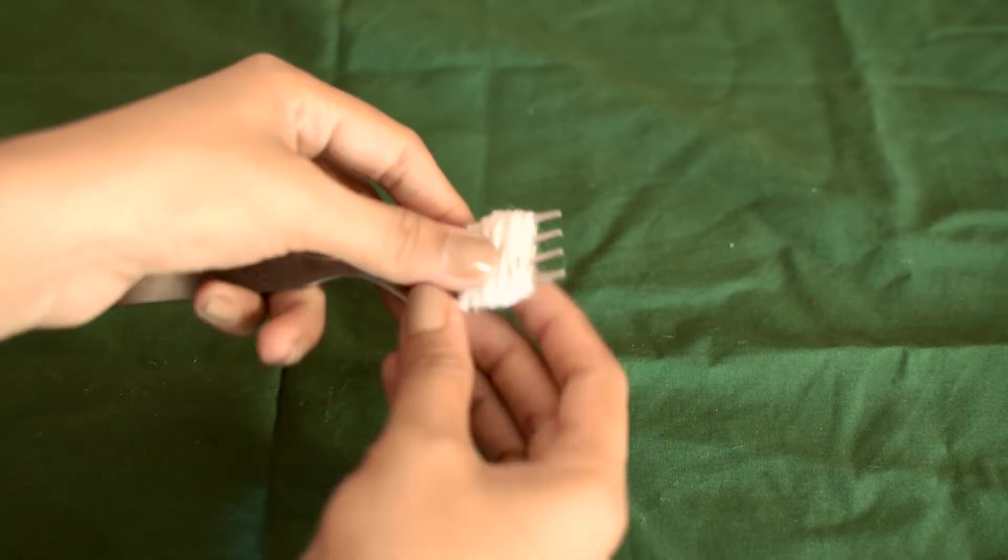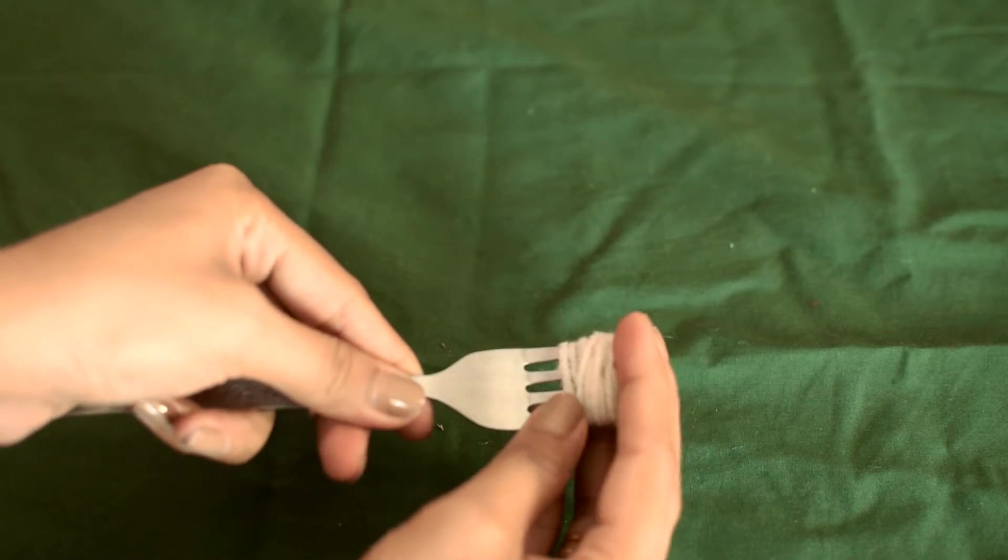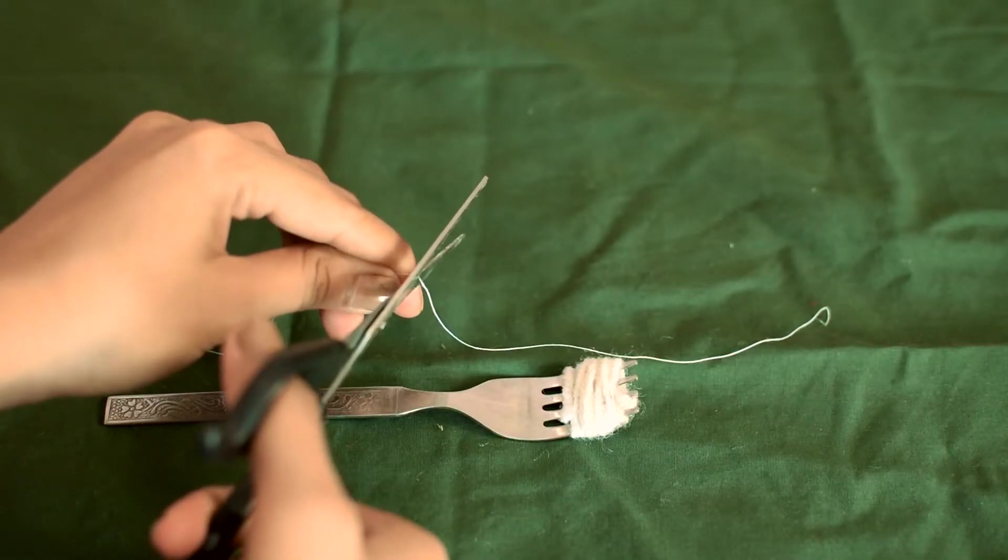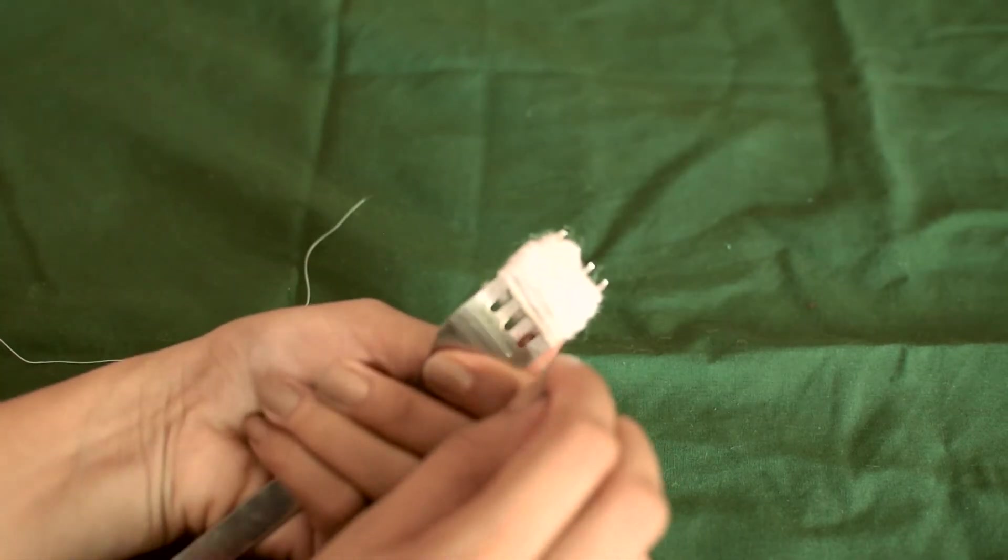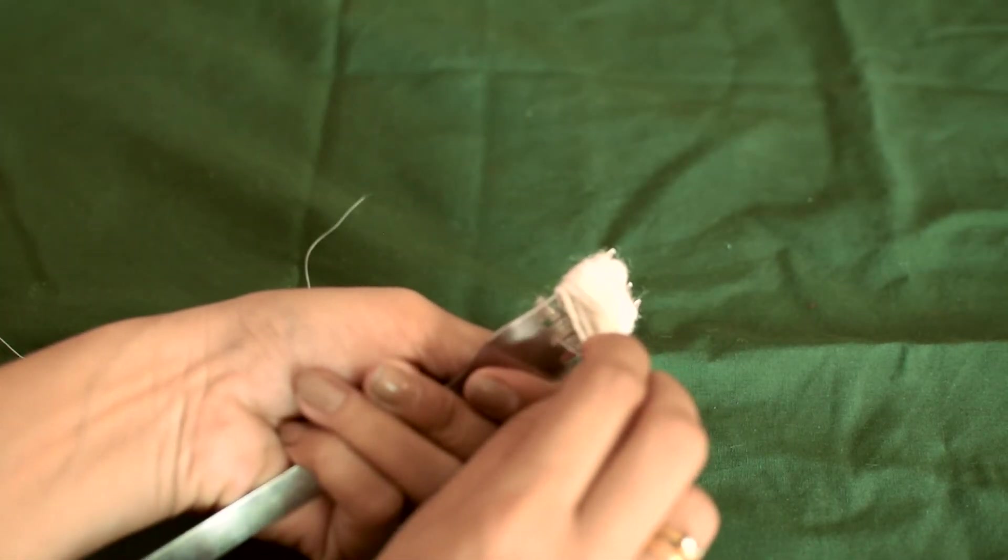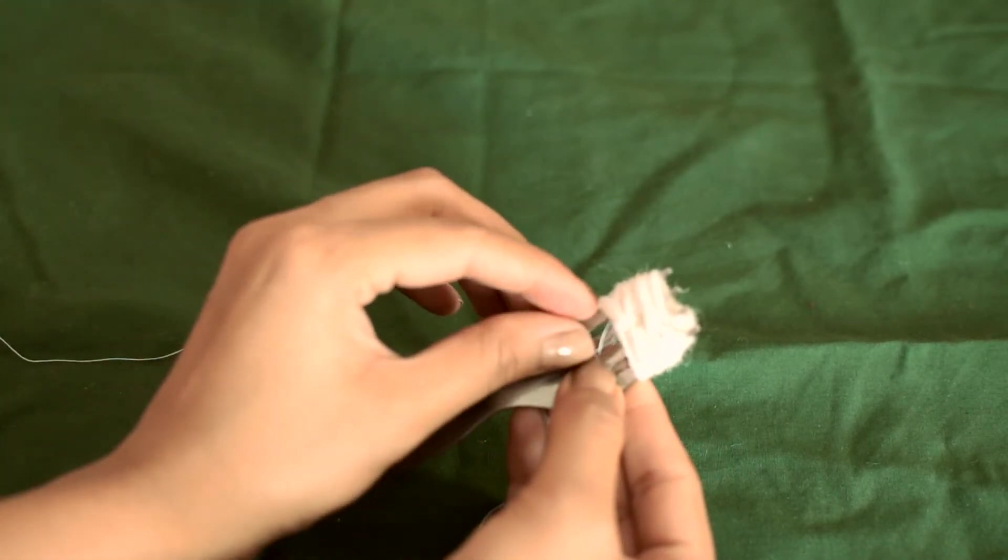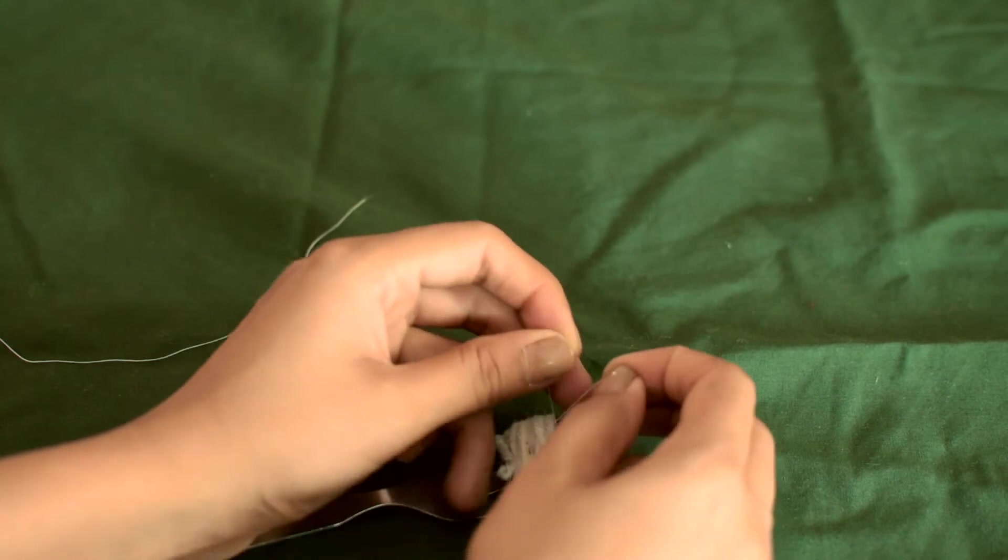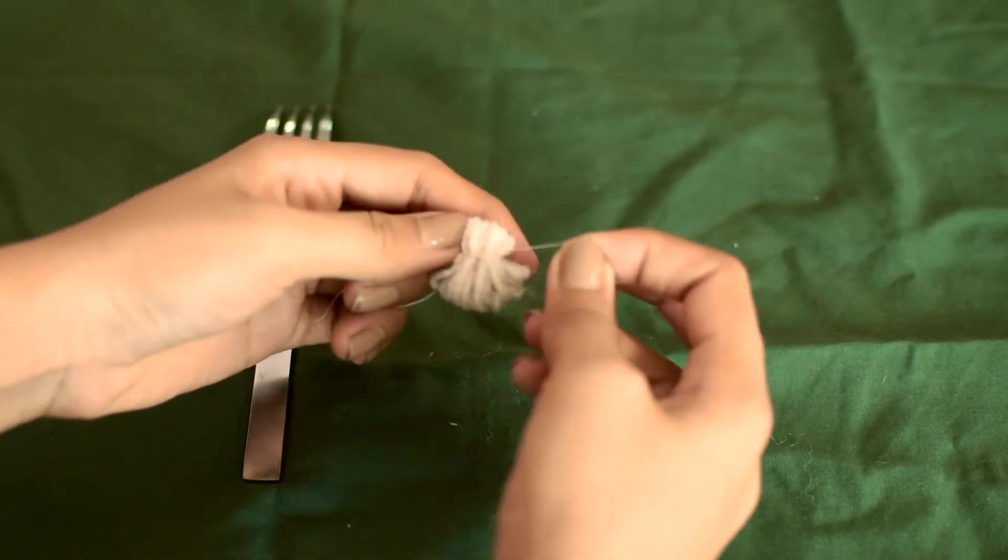After you're done, just cut it off and push the thread out a little bit. Then cut a small piece of white thread around five inches, insert the thread through the middle of the fork and tie a double knot. Make sure that the knot is secure and pull out your yarn.